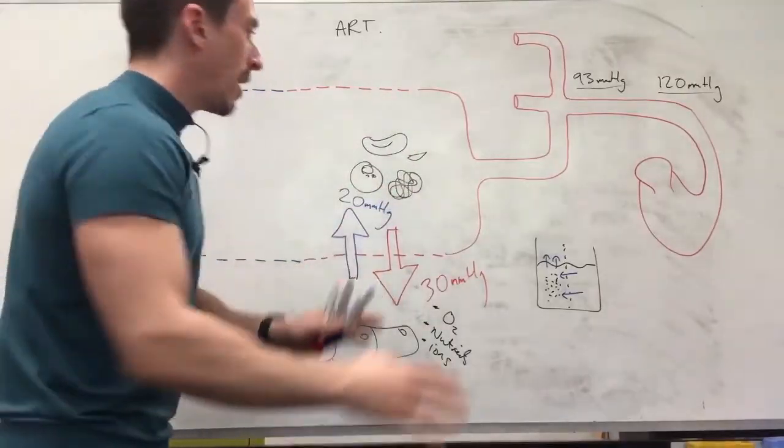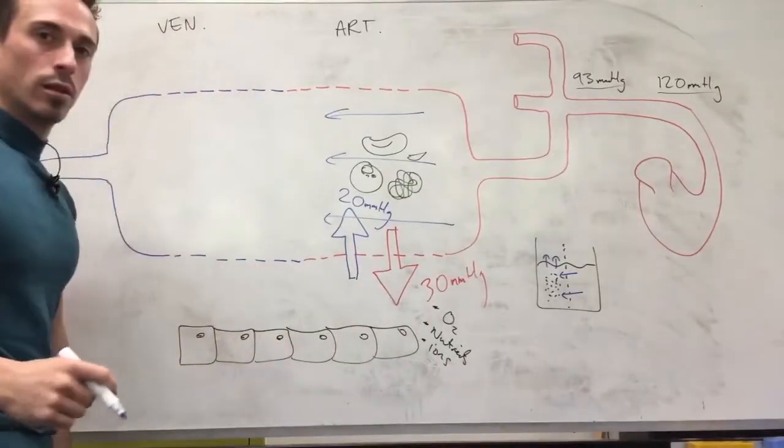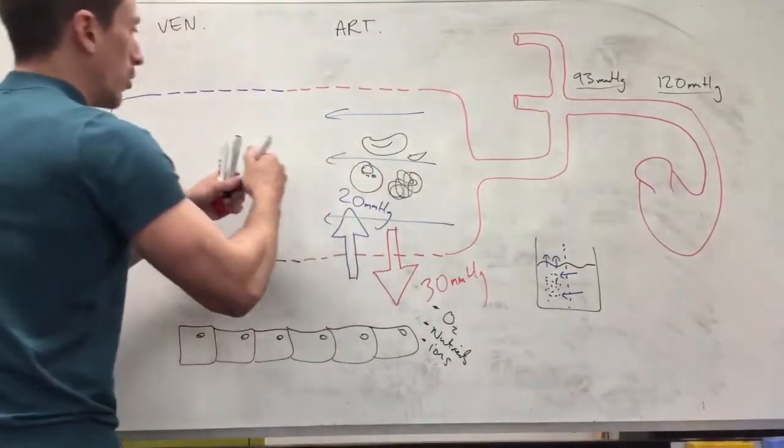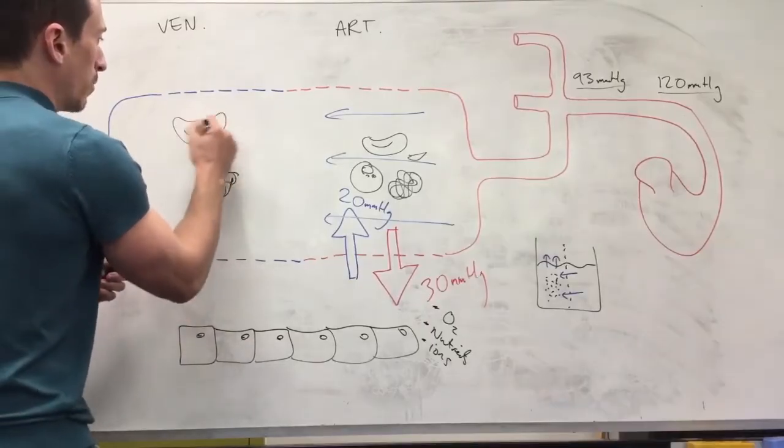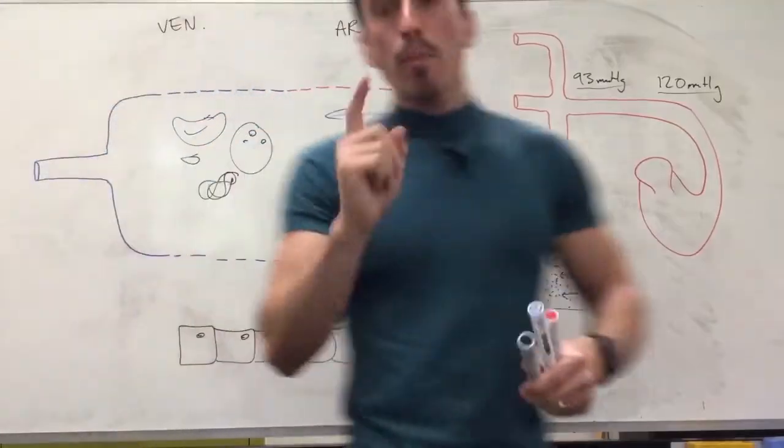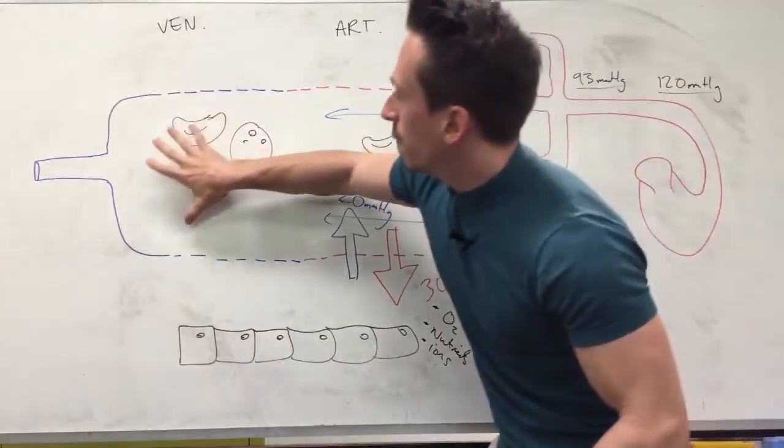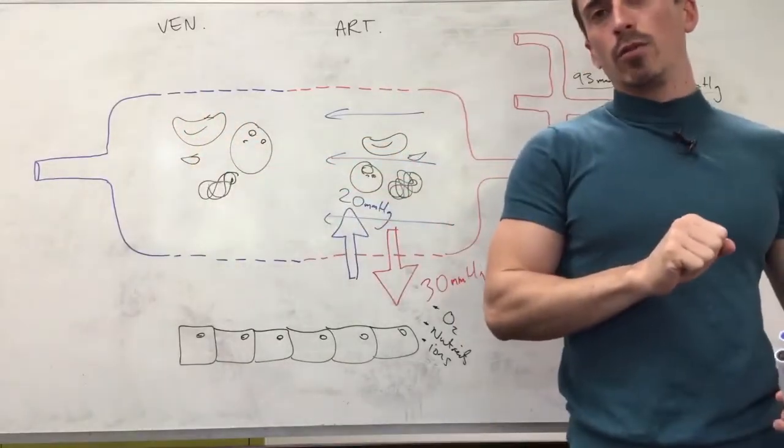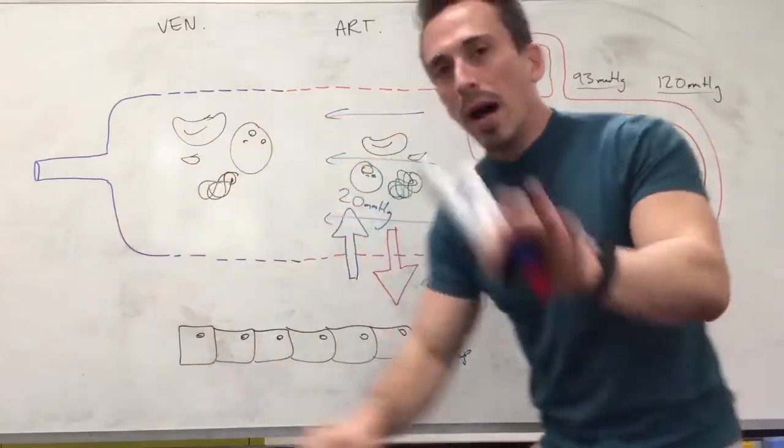Now remember everything's continuing to move through this capillary bed, so that includes the proteins, that includes the red blood cells, white blood cells and platelets. But a lot of the fluid has been pushed out now, which means on the venous end of the capillary bed you've got a high concentration gradient but you've got a low pressure.